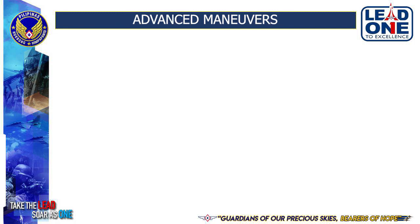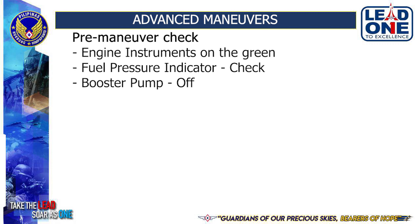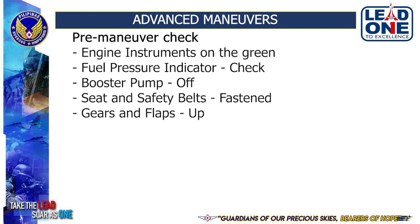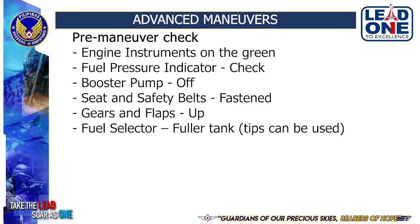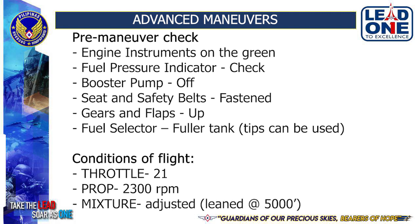Pre-maneuver check must be performed before executing advanced maneuvers. Check engine instruments on the green. Check fuel pressure. Booster pump off. Seat and safety belts fastened and adjusted. Gears and flaps up. Fuel selector set to fuller tank — tip tanks can be utilized. Conditions of flight: throttle set to 21, prop to 2300 RPM, and mixture adjusted and leaned as necessary.